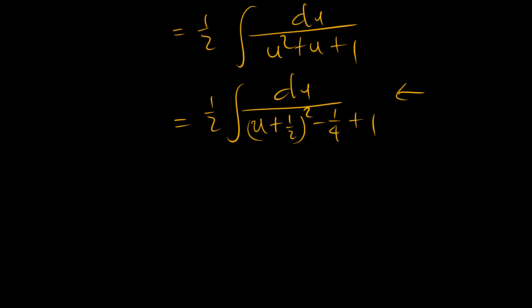And this denominator is the same as u plus a half squared minus a quarter plus 1. Why? Because u plus a half squared is equal to u squared plus u plus a quarter. And so, removing this a quarter so that we are able to retain that, we just put minus a quarter after we've squared this.